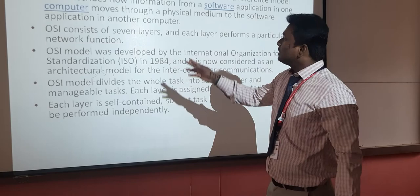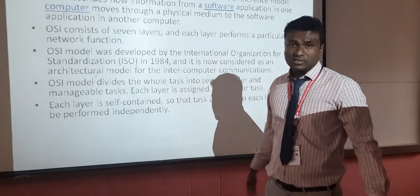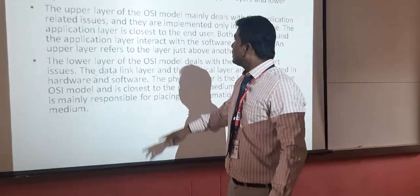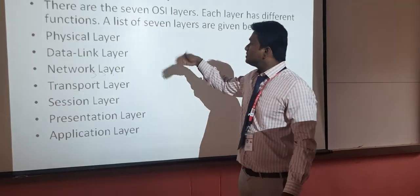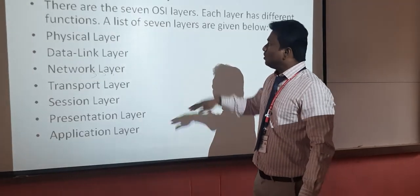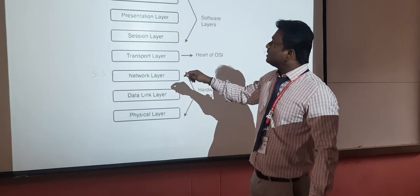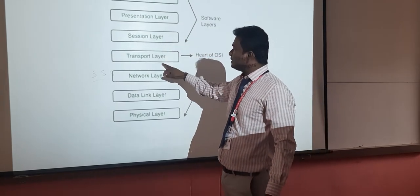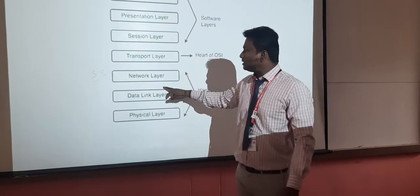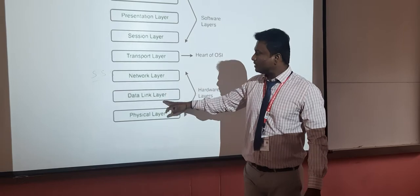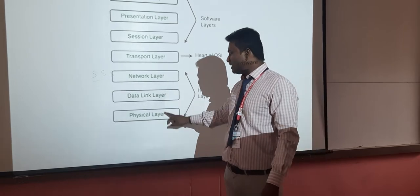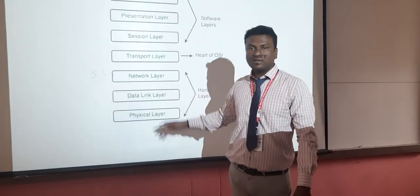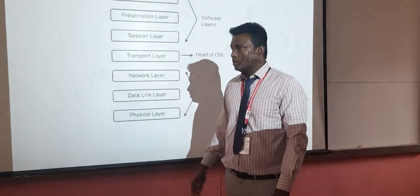The OSI model consists of seven layers. What are the seven layers? They are: Application layer, Presentation layer, Session layer, Transport layer, Network layer, Data link layer, and Physical layer. These are the seven layers of the OSI model.